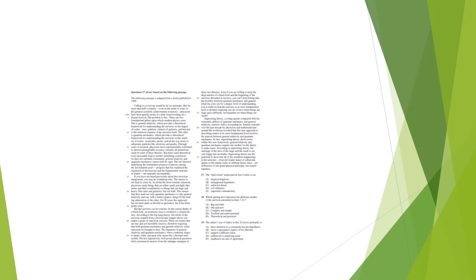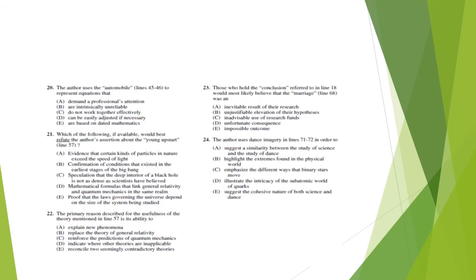These two theories underlying the tremendous progress of physics during the last hundred years—explaining the expansion of the heavens and the fundamental structure of matter—are mutually incompatible. You have big picture versus little picture, and science will eventually have to choose. Practicing the PSAA method, you don't need to know about quarks or complex physics vocabulary. You simply have to understand what's being presented: a debate between big picture and little picture understanding. From just this first section, you can answer questions 17, 18, and 19—what the dark cloud represents, which pairing best represents the different models of the universe, and what the author's use of italics emphasizes. Continue to pause periodically and summarize, and practice the PSAA method for the rest of the passage.